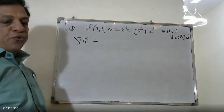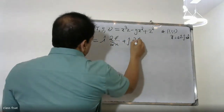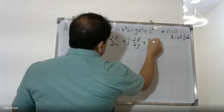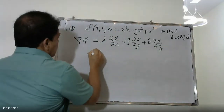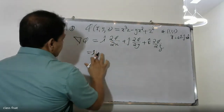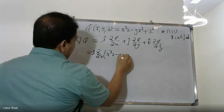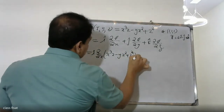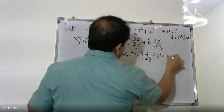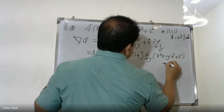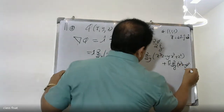We have to write the formula for del φ: i times ∂/∂x of (x³z - yx² + z²), plus vector j times ∂/∂y of (x³z - yx² + z²), plus k times ∂/∂z of (x³z - yx² + z²).